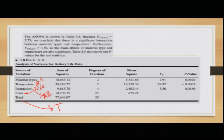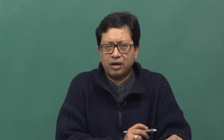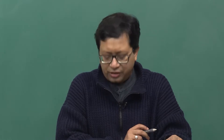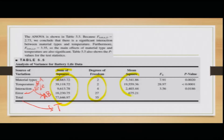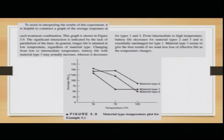The sum of squares values are given in the table. The degrees of freedom are A−1, B−1, and (A−1)(B−1) for the interaction. Dividing each sum of squares by its degrees of freedom gives the mean square values; the F values follow. To assist in interpreting the results, a graph of the average responses at each treatment condition is shown in Figure 5.9. Significant interaction is reflected by the lack of parallelism among the lines.